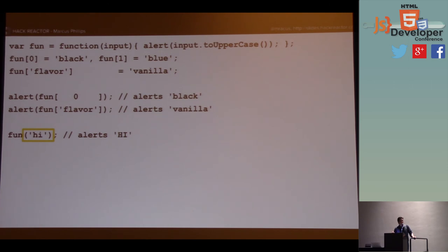That code will not necessarily run until we invoke that function. So let's invoke the function — this is going to alert 'hi'. When you see a function definition — that is, when you see 'function' followed by two parens — that is not the same thing as a function invocation. You have to look for some identifier other than the token 'function'. Anywhere that you see a different identifier with parens next to it, that's going to be a function invocation.